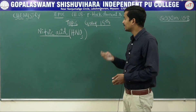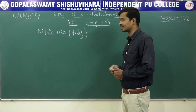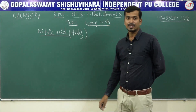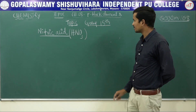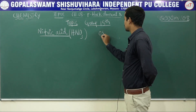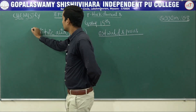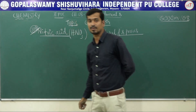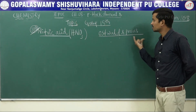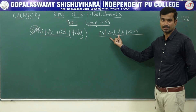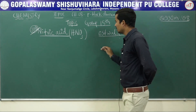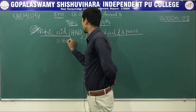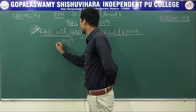Nitric acid — how it is prepared. Nitric acid is a very important chemical compound. It is prepared by the Ostwald process. This is also very important for three marks: 'Explain the manufacture of nitric acid by Ostwald process.' Ostwald is a great scientist's name. In the Ostwald process, they proceed in three steps.